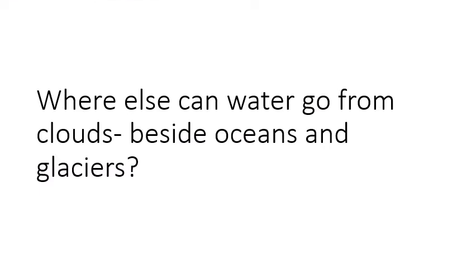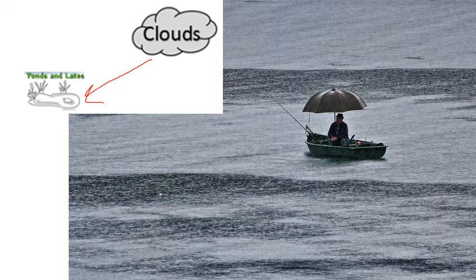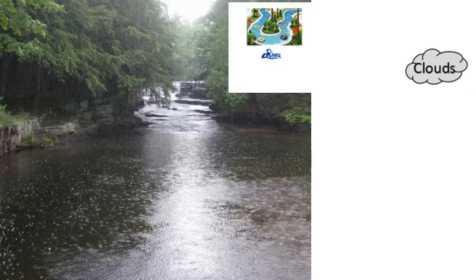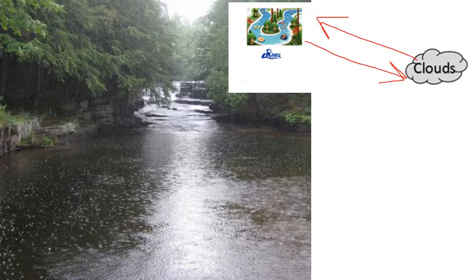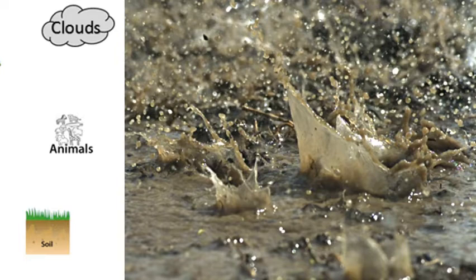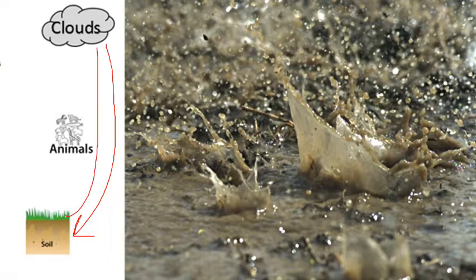Water can also fall from a cloud as rain into a lake or pond. Water from lakes and ponds can evaporate and form clouds, so that's a two-way arrow. The same is true with rivers — it can rain into a river and rivers can evaporate back into clouds. When rain hits the ground, water moves from a cloud into the soil. After a couple of days the soil dries up, because that water evaporates back up into the air to help form clouds — another two-way movement.